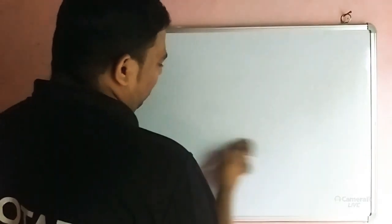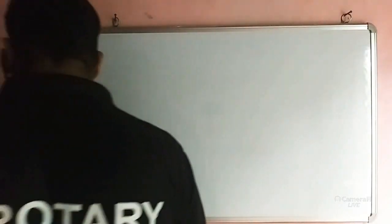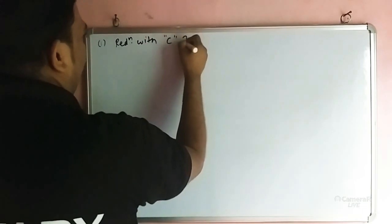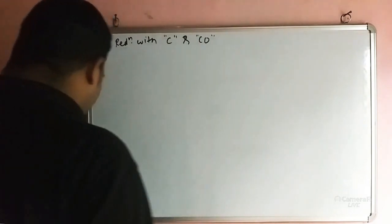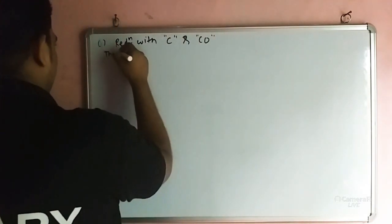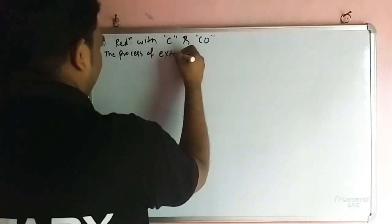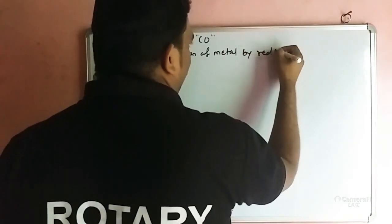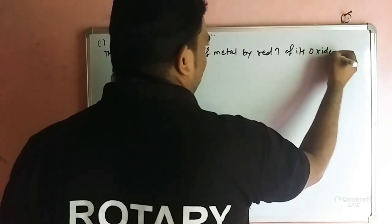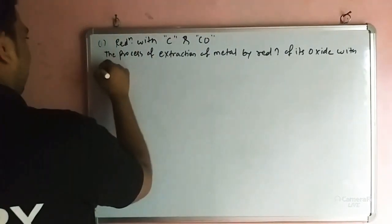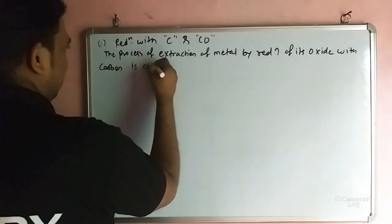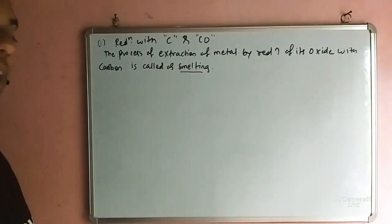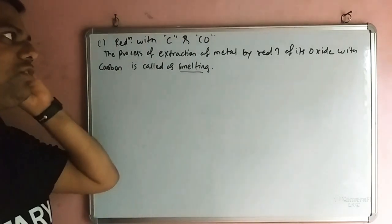Now we will discuss reduction with carbon and carbon monoxide. The process of extraction of metal by reduction of its oxide with carbon is called smelting. Keep in mind: smelting is extraction of metal using carbon as the reducing agent.